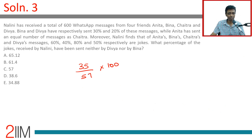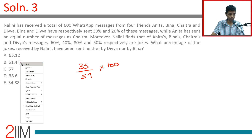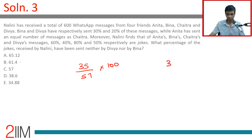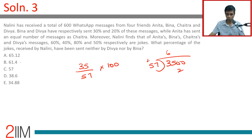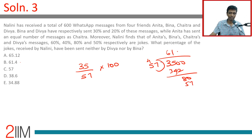38 by 57 is two-thirds, which is 66.67%, so 35 by 57 should be less than that — around 61.4%. Computing 3500 divided by 57: it goes 61 times with remainder, confirming 61.4%. The answer is choice B.